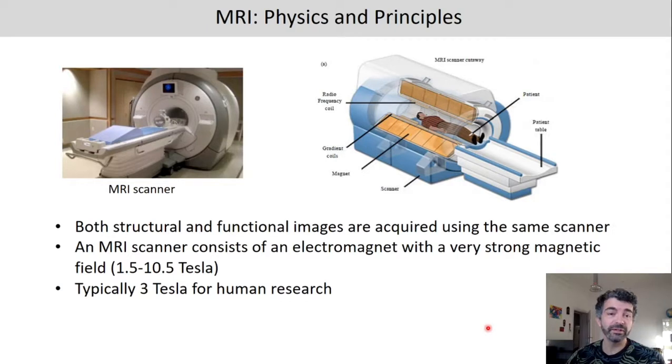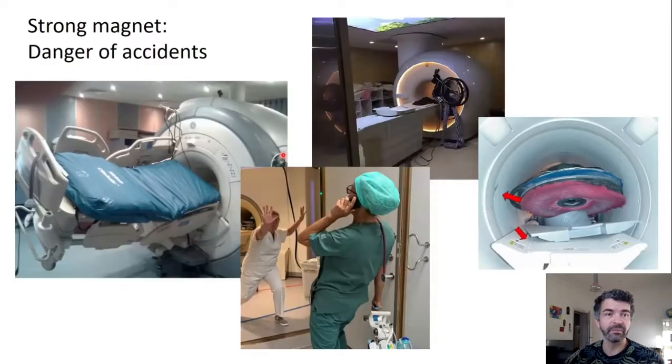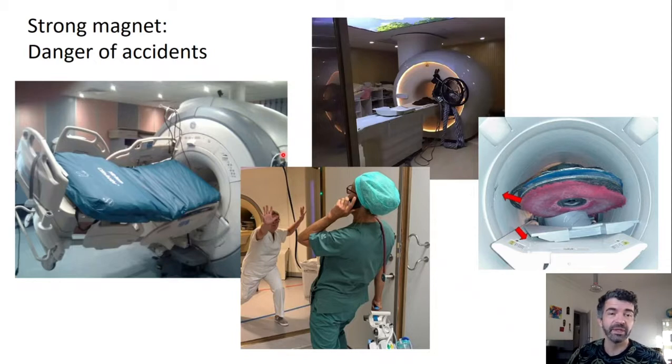Both structural and functional images are acquired using the same scanner. Here you can see an MRI scanner and this is a schematic. Here this is the magnet. This electromagnet can apply very strong magnetic field up to 10.5 tesla although 3 tesla is probably the most common scanner for cognitive neuroscience research. Because we have such a strong magnet there's also a severe danger of accidents. Here you can see a hospital bed that doesn't even touch the ground because it is so strongly attracted by the scanner.